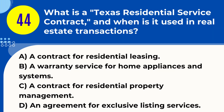Question 44. What is a Texas residential service contract, and when is it used in real estate transactions? A. A contract for residential leasing. B. A warranty service for home appliances and systems. C. A contract for residential property management. D. An agreement for exclusive listing services. Answer: B. A warranty service for home appliances and systems. Explanation: In Texas real estate, a residential service contract is a home warranty service that covers the repair or replacement of home appliances and systems, often used to add value to a real estate transaction.